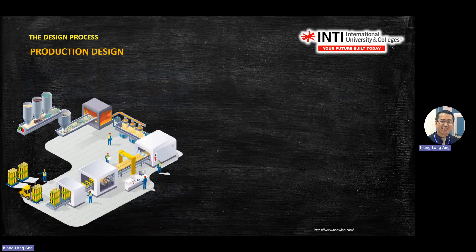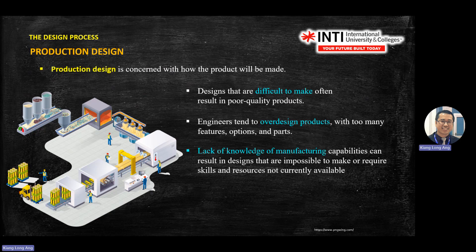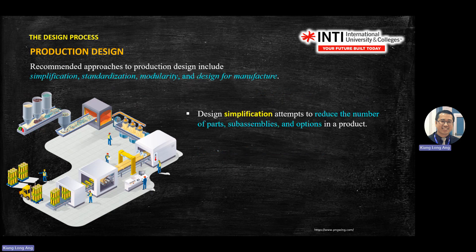We now go into production design. Production design is the process to make the products. The recommended process in production design involves four keywords: simplified, standardized, modular, and designed for manufacture (DFM). You simplify the process, standardize the process, put it in modules — one process at a time — and design for manufacture.